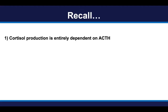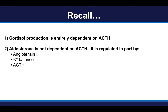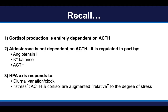Cortisol production is entirely dependent on ACTH. If there is no ACTH, the adrenal glands will not respond and make cortisol. In contrast, aldosterone — another key adrenocortical hormone — is not entirely dependent on ACTH. It is also independently regulated by angiotensin 2 and potassium balance. Therefore, even in the absence of ACTH, aldosterone regulation is typically normal. This entire hypothalamic-pituitary-adrenal axis also responds to the circadian rhythm and the body's internal clock, as well as stress.